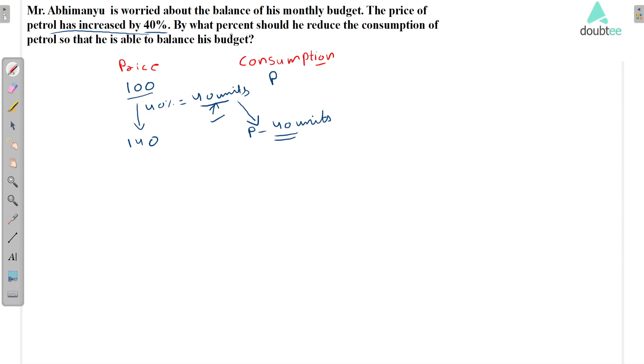Now what they are asking: by what percentage should he reduce the consumption of petrol? Now we have to find the percentage of this thing. We reduce 40 units and the price of petrol at that condition is 140.